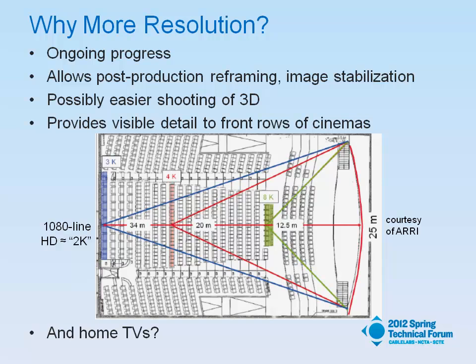In production and post-production, you can do reframing. You can do image stabilization. Possibly you can record 3D better. And if you're in a movie theater, everyone from there forward can make out 8K resolution, everyone from there forward can make out 4K resolution, and even this person all the way in the back of the theater can make out 3K resolution — that's 50% better than 1080p.